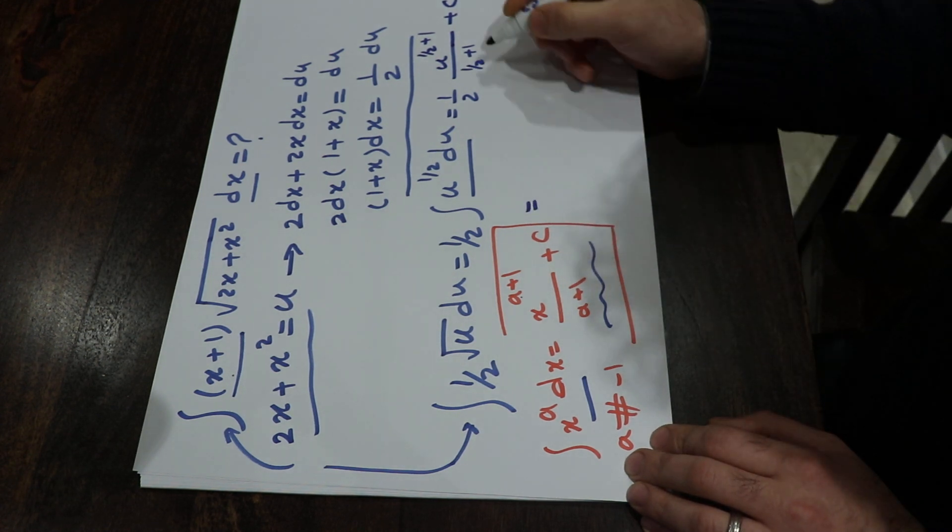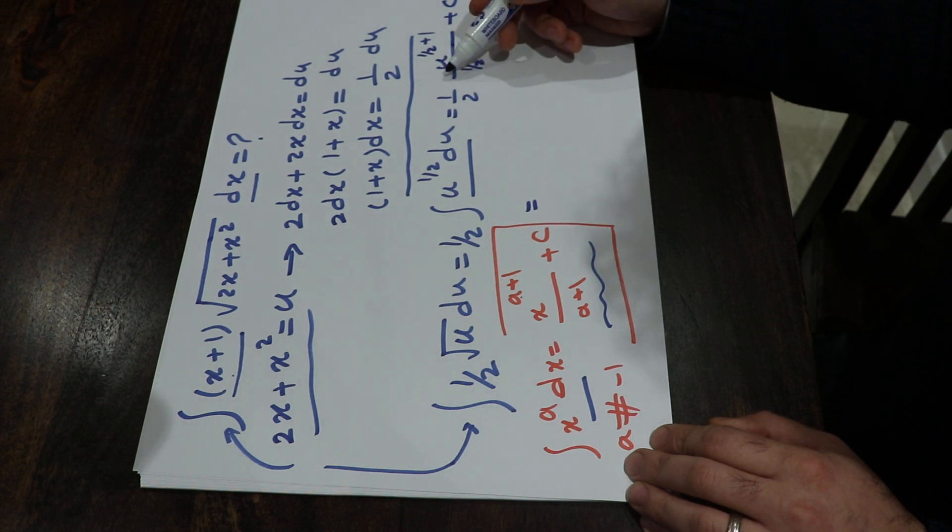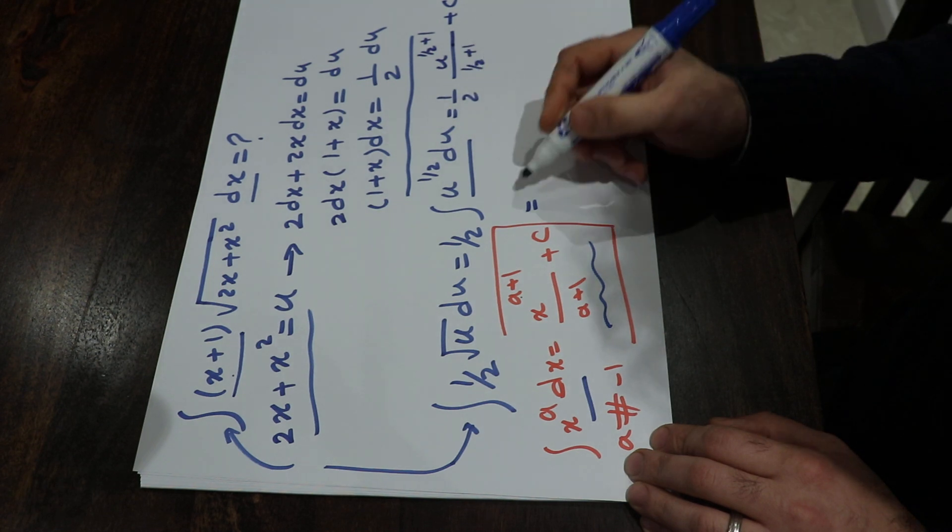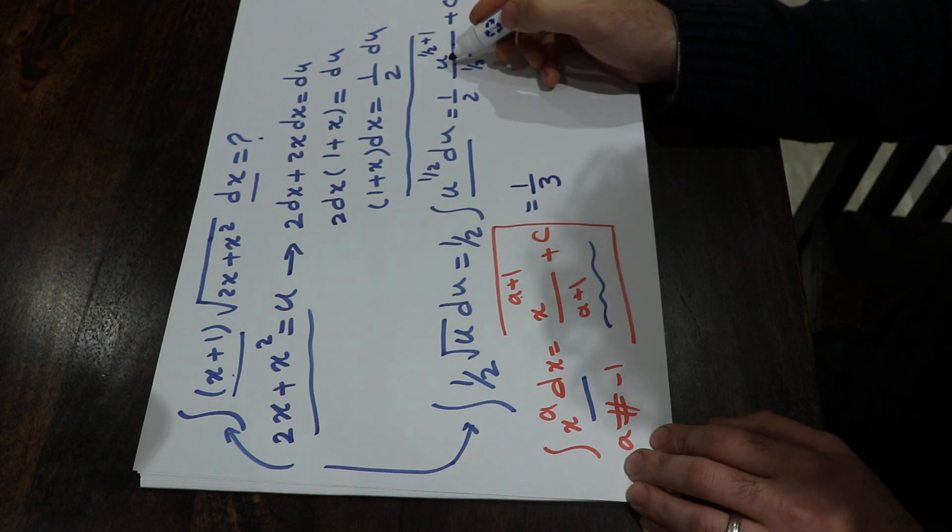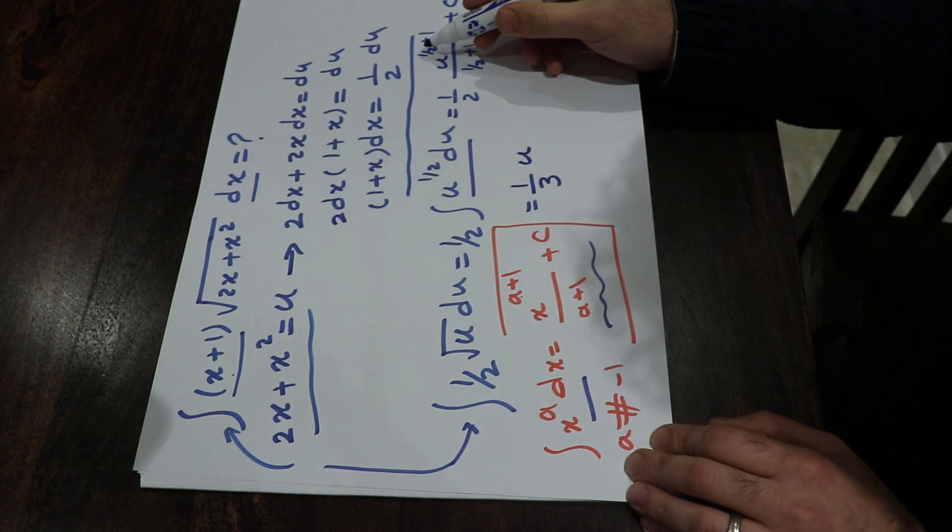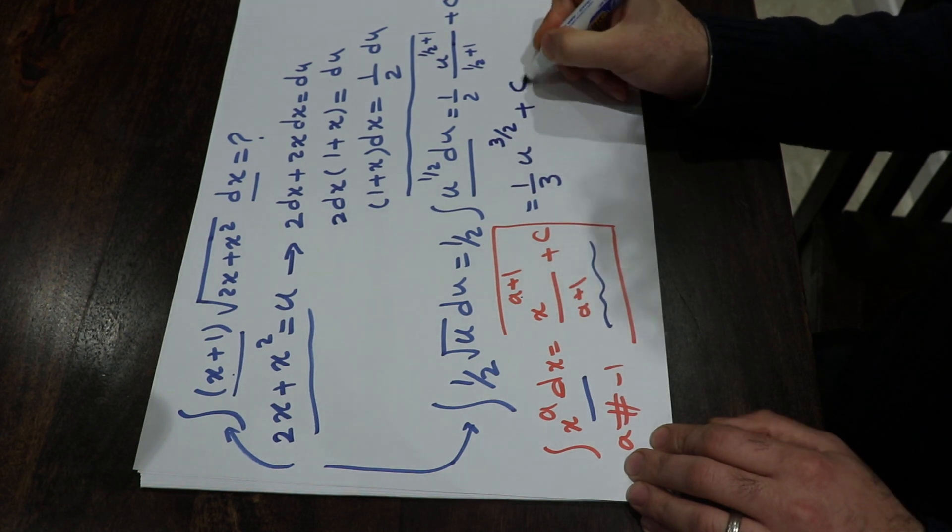So that will be equal to 1 divided by 2 plus 1. That will be 3 divided by 2. If you do the inverse, that will be 2 divided by 3 times 1 divided by 2. That will be 1 divided by 3 times u with the power of 1 divided by 2 plus 1. That will be 3 divided by 2 plus c.